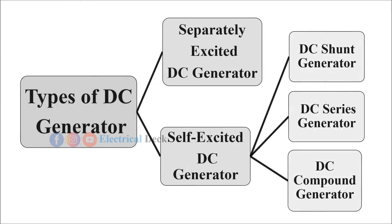The DC generators are divided into two types: separately excited DC generator and self-excited DC generator. Again, the self-excited generator is divided into three types: DC shunt generator, DC series generator, and DC compound generator. Let us check out briefly about them.